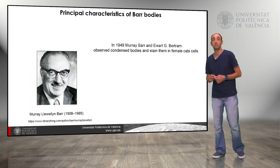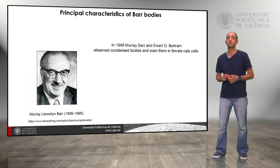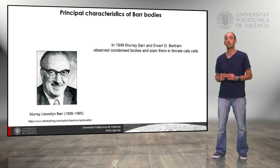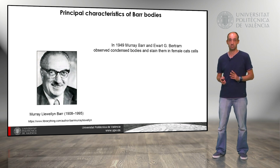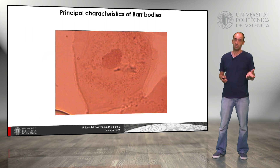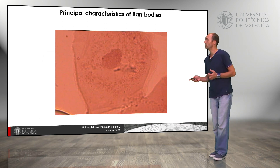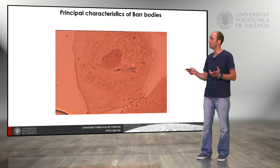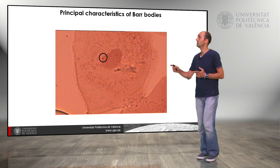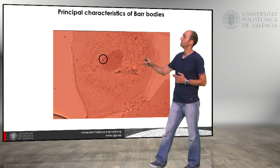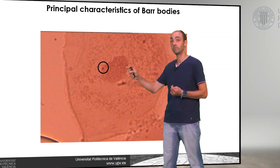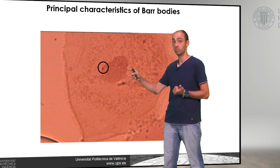Later, in 1949, Murray Barr and Edward Bernard observed condensed bodies and stained them in female cat cells. We can see that in this picture — we have a cell that is stained, we can see the nucleus, and inside the nucleus we see a stained body that they called bar bodies.